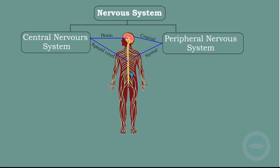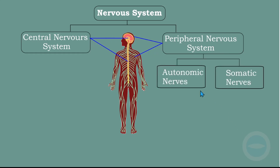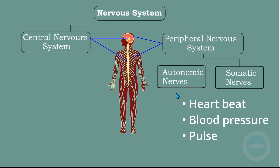The brain communicates with parts of the body through the spinal cord. This peripheral nervous system is divided into two: we have autonomic nerves and the somatic nerves. The autonomic system is responsible for actions that happen automatically in our body, like heartbeat — you cannot control your heartbeat — like blood pressure and pulse. The autonomic system is responsible for that.